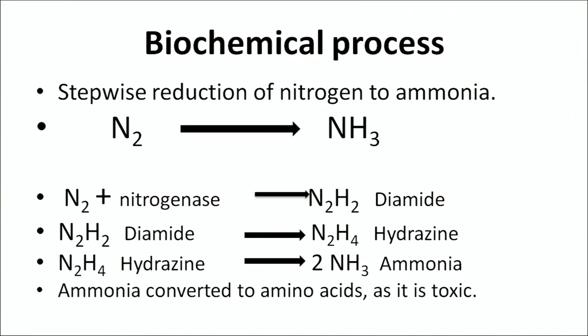This is an overview of the biochemical process involved in the stepwise reduction of nitrogen to ammonia. This process happens in three sub-steps. Nitrogen is first converted in the presence of nitrogenase enzyme into a compound called diamide. Talking about nitrogenase and leguminous plants, we will show how leguminous plants have root nodules where this whole process occurs.